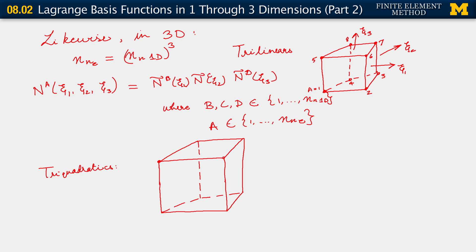Okay, so these would be our vertex nodes, or vertex degrees of freedom.